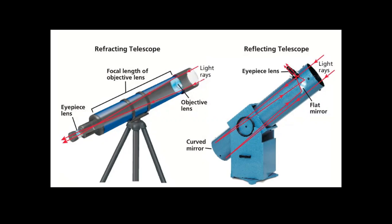When we talk about telescopes and hear the word, we usually picture one type — refracting telescopes. But those are only one type. The other type is reflecting telescopes.